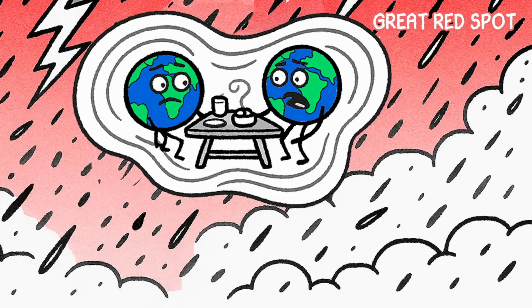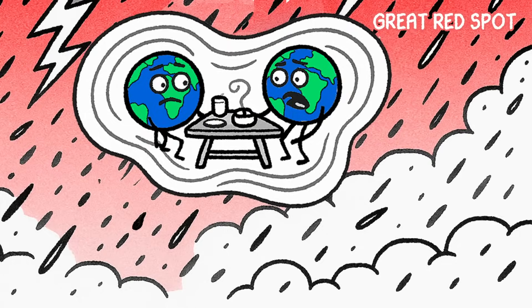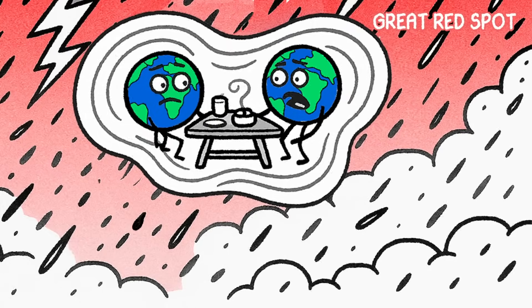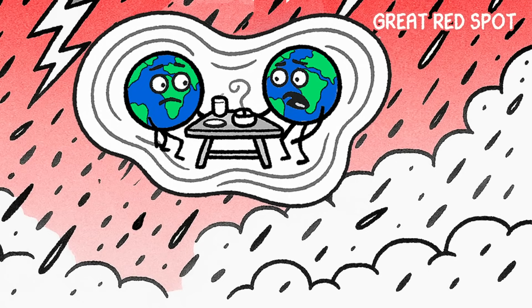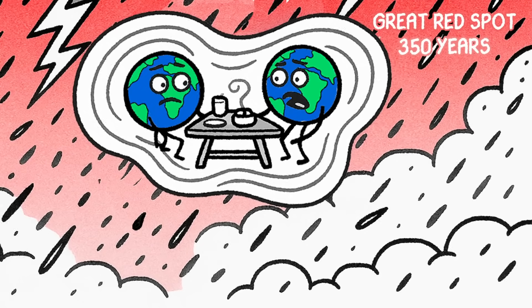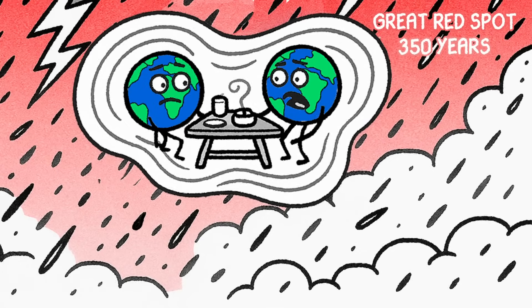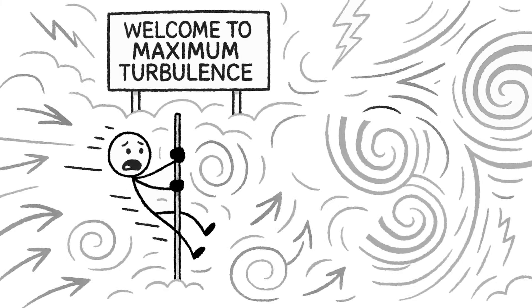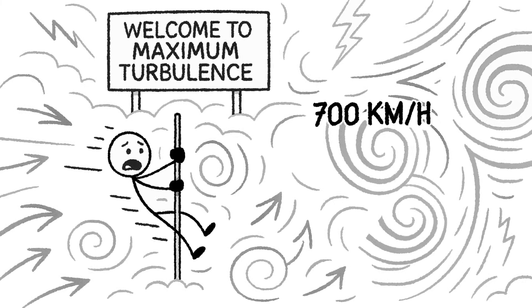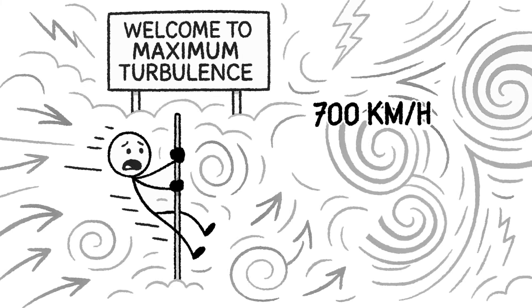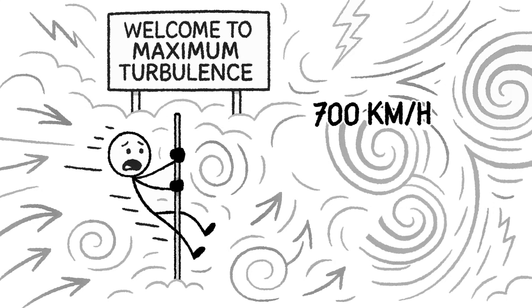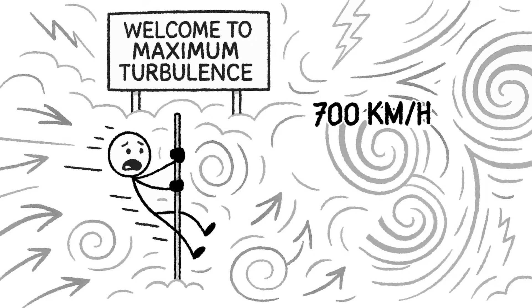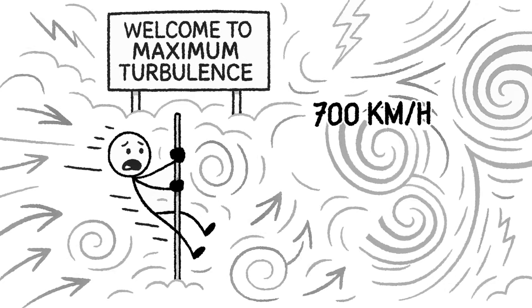Enter the Great Red Spot. Imagine a storm so big you could drop two Earths into it and still have room for snacks. This swirling beast has been raging for at least 350 years, possibly even longer, and it shows no signs of slowing down. Its winds can reach over 700 kilometers an hour, and the pressure differences inside of it are so extreme they generate constant turbulence, shockwaves, and maybe even vertical cyclones within the storm itself. This isn't a storm. It is a planetary monument to chaos.